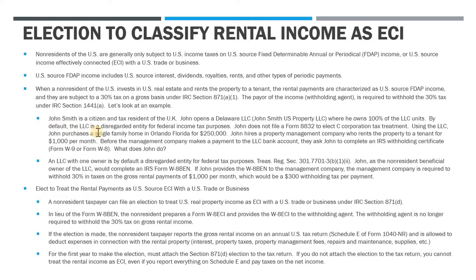Let's look at an example. We have John Smith — a citizen and tax resident of the U.K., so he is not a U.S. tax resident in any regard. John decides to get into U.S. real estate investing, so he opens a Delaware LLC named John Smith U.S. Property LLC, and John owns 100% of the LLC units. By default, the LLC is a disregarded entity for federal tax purposes, and John is not going to file an entity classification election via Form 8832 — he wants to leave it as a disregarded entity. Using the LLC, John purchases a single-family home in Orlando for $250,000, titled under the LLC name in Florida.